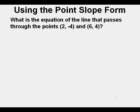And finally, we'll look at using the point slope form to find the equation of a line from two points. The two points we have are 2 comma negative 4 and 6 comma 4.